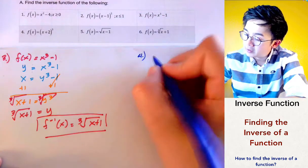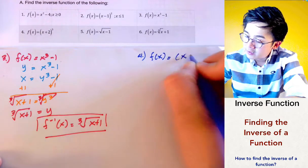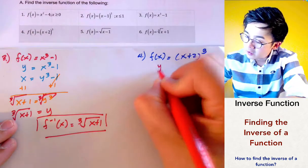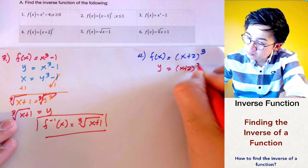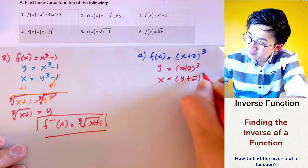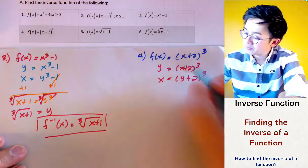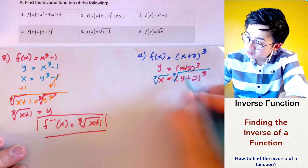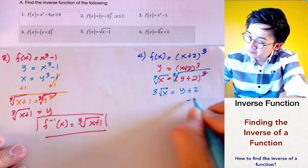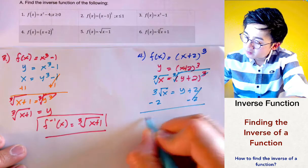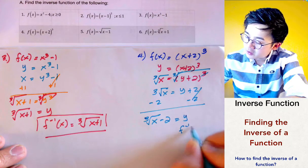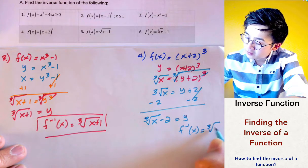For problem number 4, we have f(x) = (x + 2)³. We rewrite this as y = (x + 2)³ and interchange x and y. Taking the cube root of both sides eliminates the cube, giving us ∛x = y + 2. Subtracting 2 from both sides gives us y = ∛x - 2. So f⁻¹(x) = ∛x - 2.